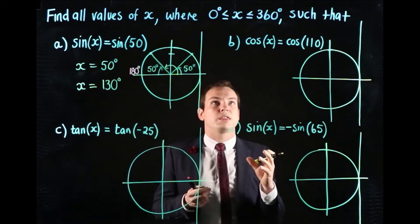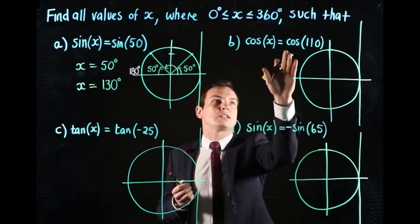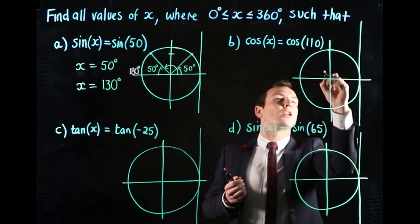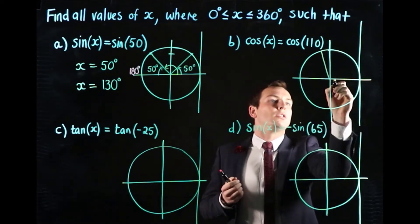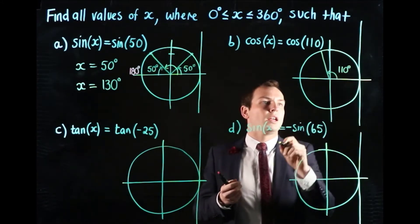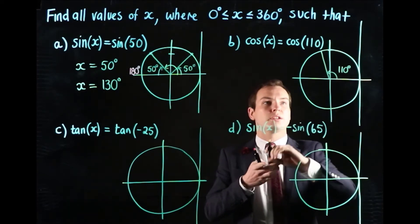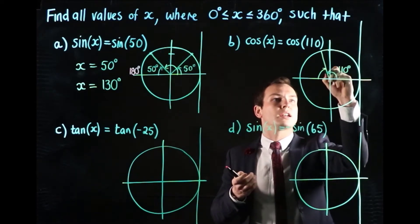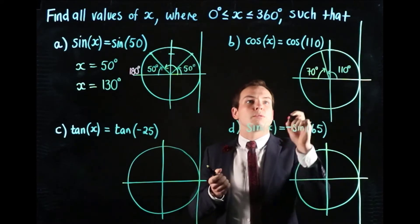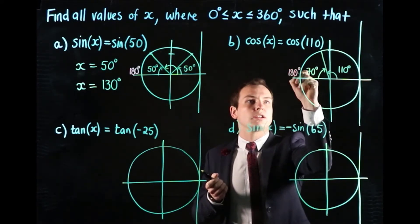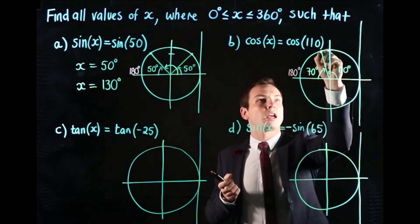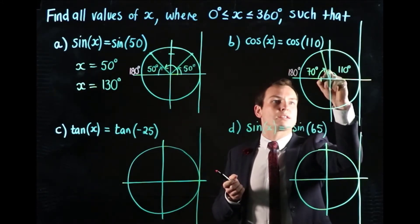We're going to do the exact same thing now for part b, but we now have the relationship cos(x) equals cos(110). The first thing we'll do is locate 110 degrees. That's pretty close to 90, so it's going to be somewhere up there. This angle here is 110 degrees. Now if we think about that, it's going to be backwards from 180 degrees by 70 degrees.